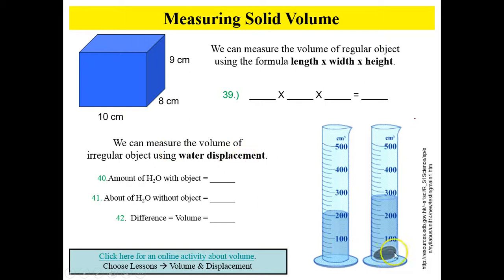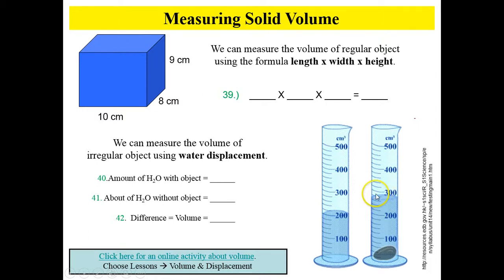However, if the object you're measuring is uneven, like a stone or a rock, you use water displacement to figure out the volume. For number 40: how much water is in the graduated cylinder with the object? Notice your scale — here's 200, here's 300. What do you count by? Each line represents 20. Fill in the amount of water shown with the stone in it. Number 41: fill in the amount without the stone. Then subtract number 40 minus number 41 to give you the volume of that stone.